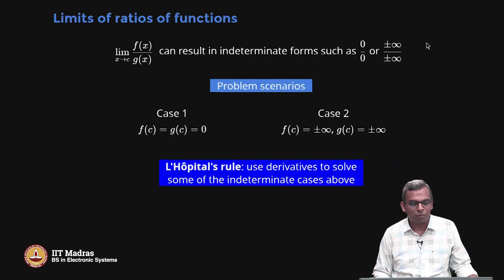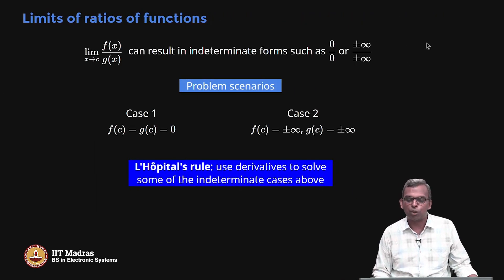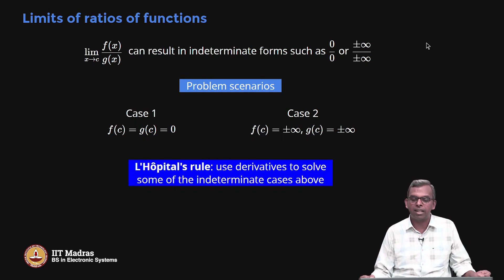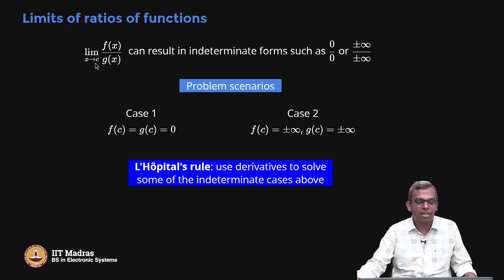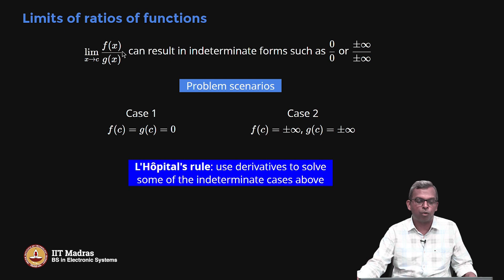So let us get started. Limits of ratios of functions are always a little complicated because you have these indeterminate forms. What are these indeterminate forms? You may get 0 by 0. Normally, how do you find the limit as x tends to c of f(x) by g(x)? You may simply substitute x equals c in the numerator, g equals c in the denominator, and see if the ratio comes to something finite. But if you get a 0 by 0 form or an infinity by infinity form, you are stuck.